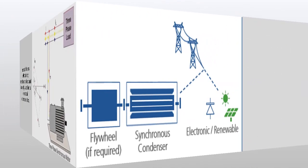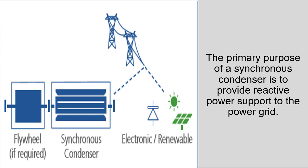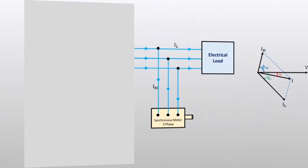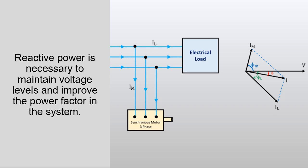The primary purpose of a synchronous condenser is to provide reactive power support to the power grid. Reactive power is necessary to maintain voltage levels and improve the power factor in the system.